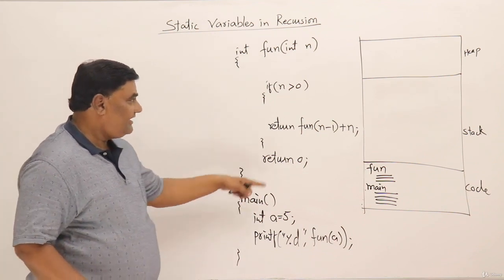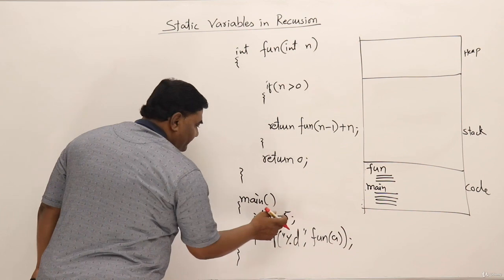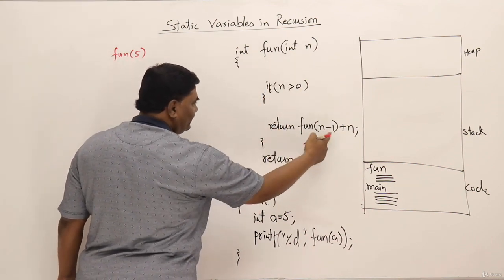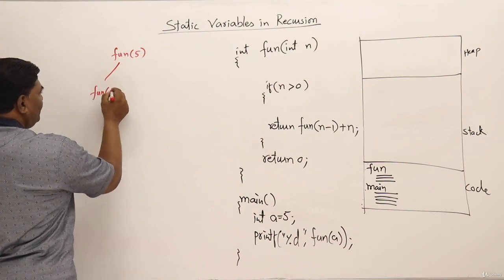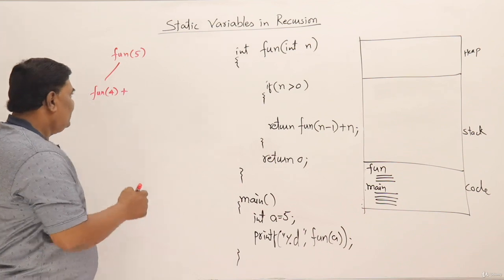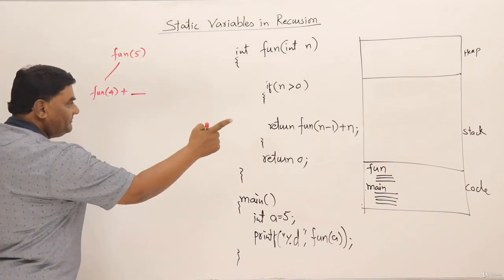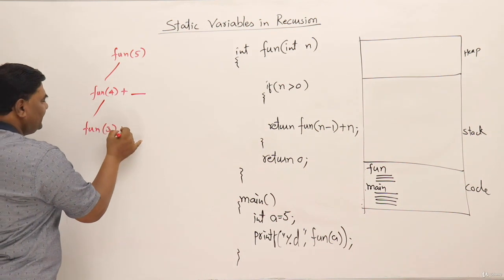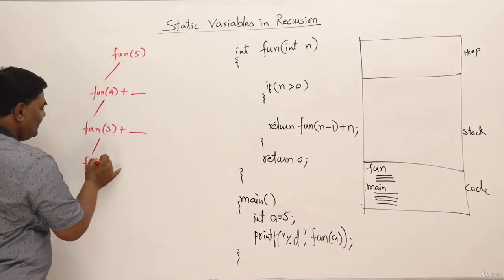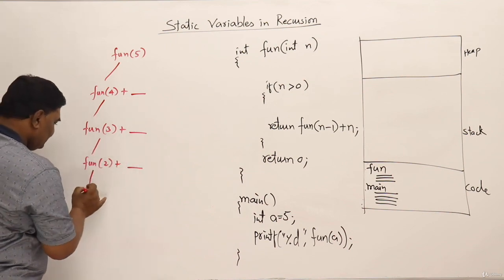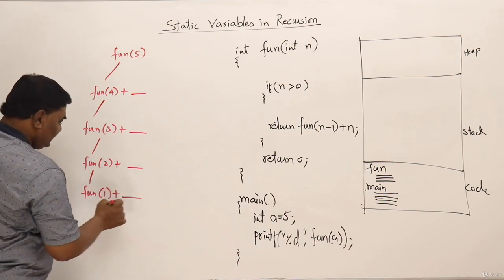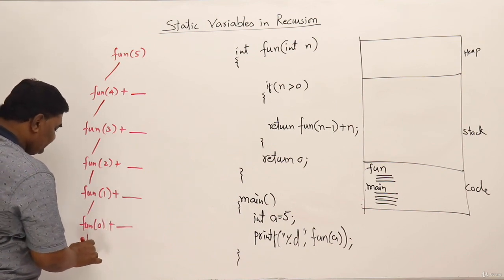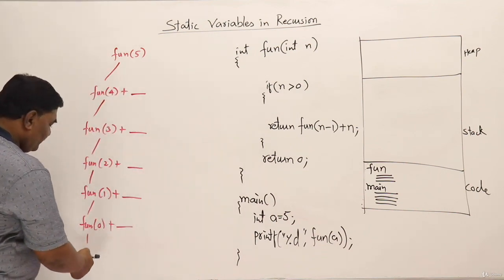I will trace this function for value 5. The function is called with value 5 — fun(5). Since 5 is greater than zero, it calls fun(4) plus n (which is 5, filled in later). Then it calls fun(3), fun(2), fun(1), and fun(0). Fun(0) returns 0.